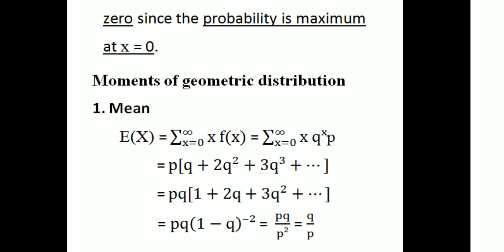Substituting x = 0, 1, 2, 3, etc., and taking p as common, we compute the series. After simplification using series identities, p · q · (1 + 2q + 3q² + ...) = p · q · (1-q)^(-2) = p · q / p² = q/p. So the mean of the geometric distribution is q/p.